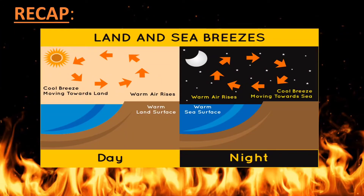In daytime, sea breeze occurs — the cooler air from the sea moves towards the land, and the warmer air from the land moves towards the sea. This is termed as sea breeze. The reverse of this happens at night time, in which the cooler air from the land moves towards the sea.